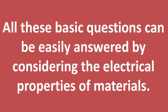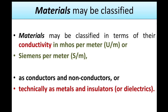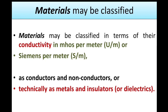All these basic questions can be easily answered by considering the electrical properties of the materials. If you consider the electrical properties, it becomes very straightforward to analyze. So, what is a material? Material may be classified in terms of their conductivity. Based on conductivity — measured in Mhos per meter or Siemens per meter — a material can be classified as conductors and non-conductors, or technically as metals and insulators or simply dielectrics.